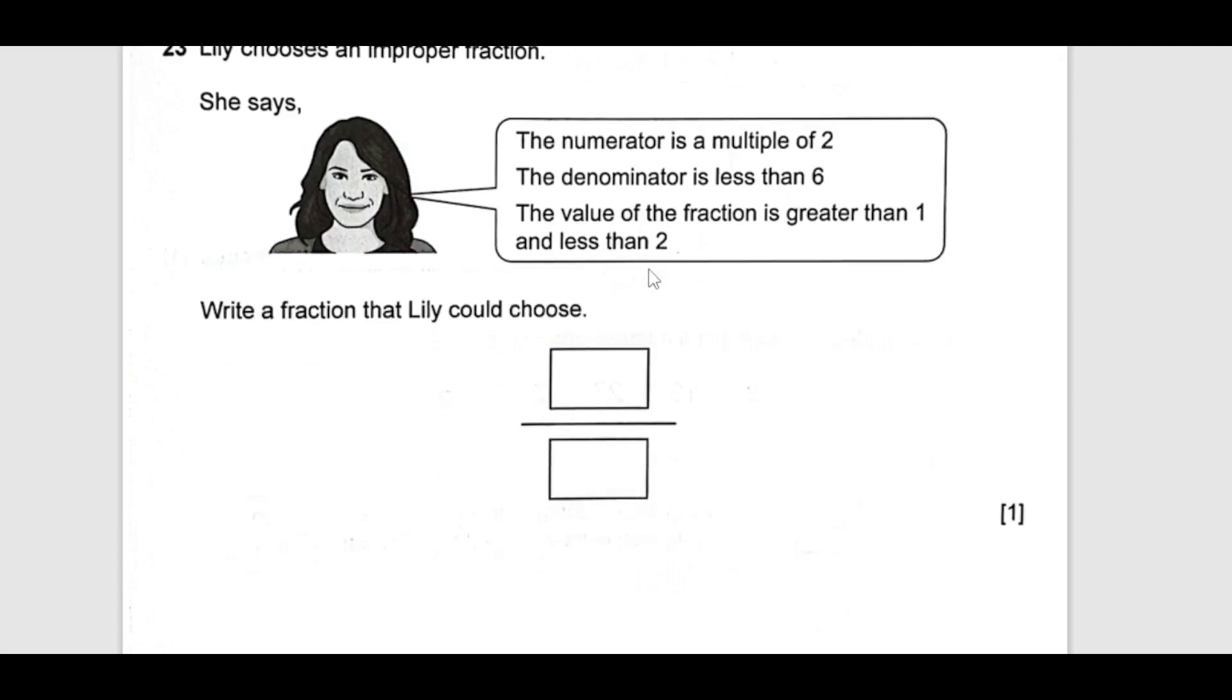Next we have number 23. Lily chooses an improper fraction. She says the numerator is a multiple of 2, so it may be 2, 4, 6, 8. And the denominator is less than 6. Less than 6 may be 1, 2, 3, 4, 5. The value of the fraction is greater than 1 and less than 2. It can be 6 over 5.